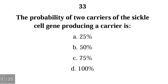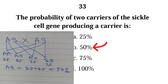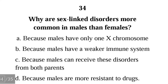Number thirty-three: the probability of two carriers of the sickle cell gene producing a carrier is — 25%, 50%, 75%, or 100%? The correct answer is B, 50%. If two carriers of the sickle cell gene (AS) get married, the probability of producing another AS child is 50%.